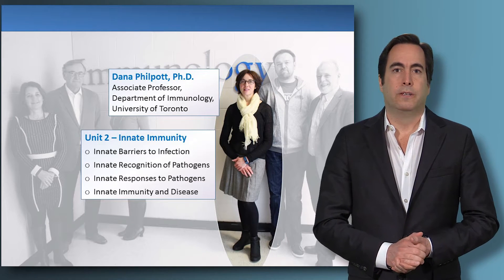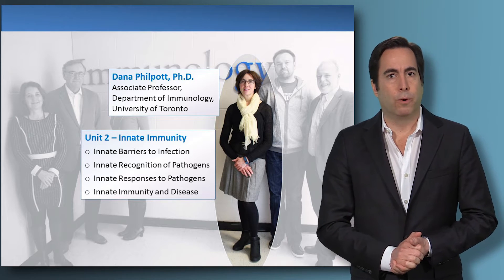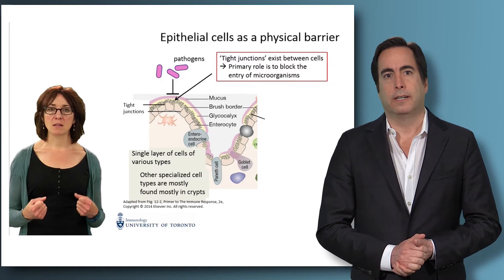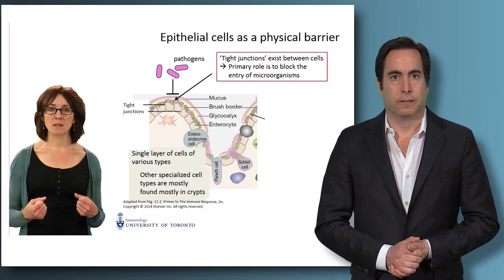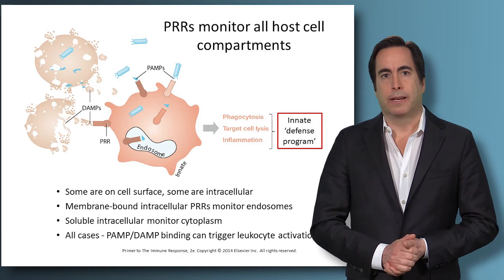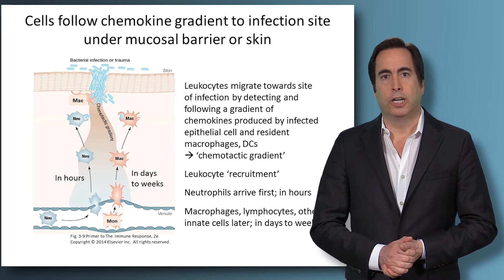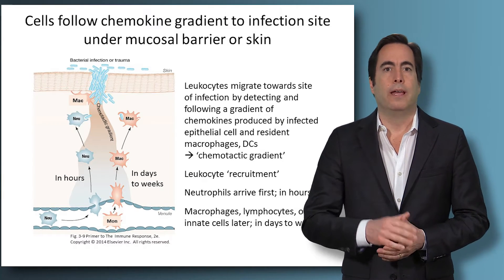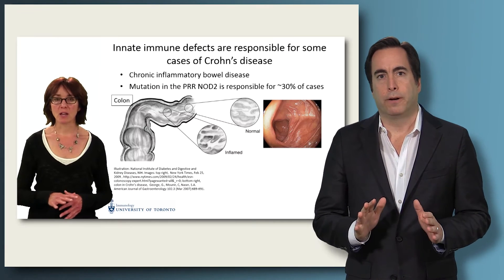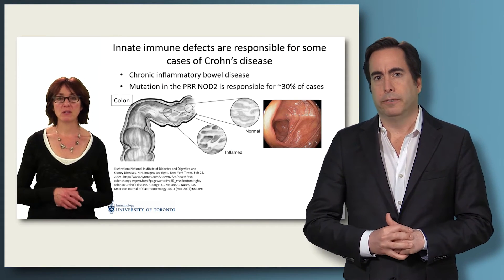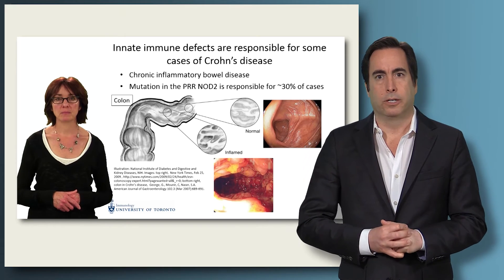In Unit 2, Dr. Dana Philpott focuses on the role of innate immunity in host defense. She describes how the skin and mucosal surfaces, such as the gut, provide barriers to infection. She then shows how microbes that get by these barriers are detected and destroyed by innate immune cells, and how the inflammation that is generated plays a critical role in host defense. Dr. Philpott also provides examples of faulty innate responses that lead to serious and sometimes lethal consequences.